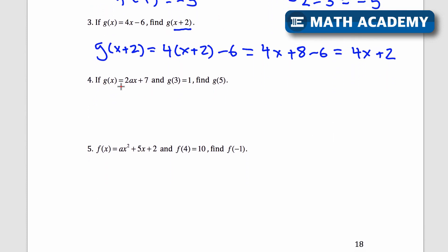Number 4. If g of x equals 2ax plus 7 and g of 3 equals 1, find g of 5. So I'm given one kind of like x, y value almost here. Okay, so the output when I input 3 is 1. And I have to find what is the output when I input 5. That's what I'm trying to find here. And you notice there's another a variable. So that's kind of in the way right now. So I better find out what a is first.